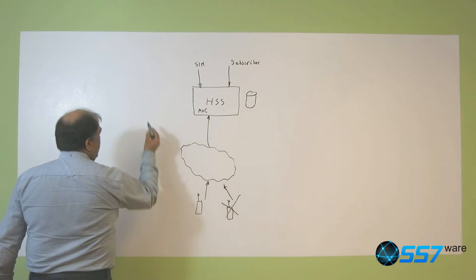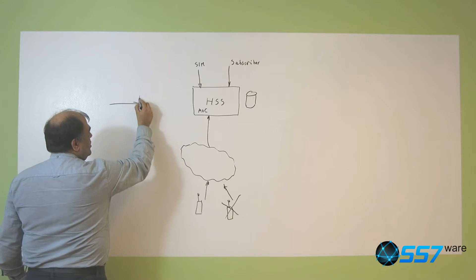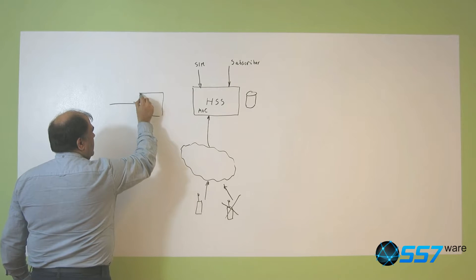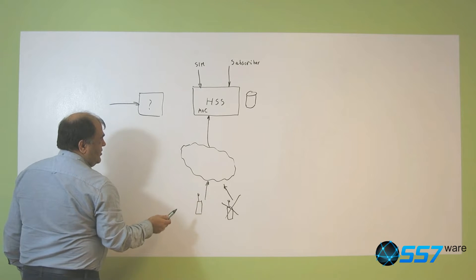So for example if we have a mobile terminated call, a phone call that comes in the network, there will be a component here that would need to send the call to the subscriber.